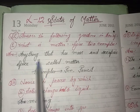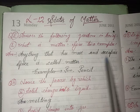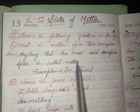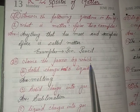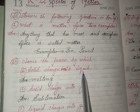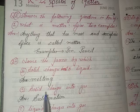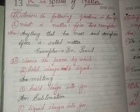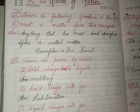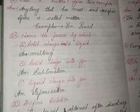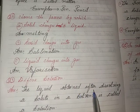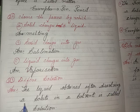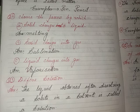Answer: anything that has mass and occupies space is called matter. Examples: paint, pencil. Name the process by which: a) a solid changes to liquid — melting; b) a solid changes into gas — sublimation; c) a liquid changes into gas — vaporization. Define solution: the liquid obtained after dissolving a solute in the solvent is called a solution.